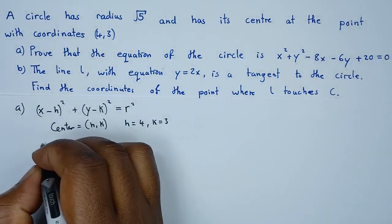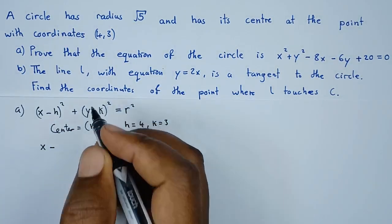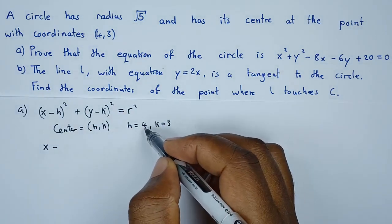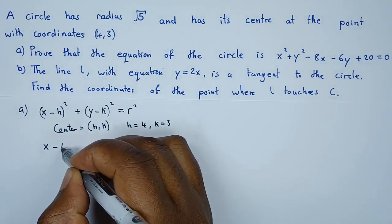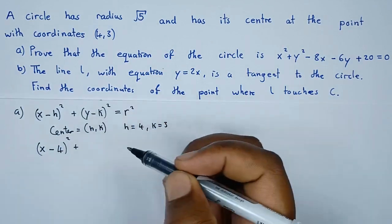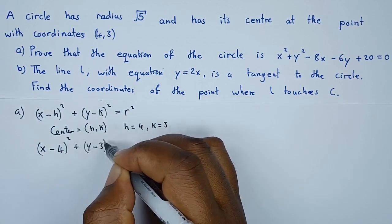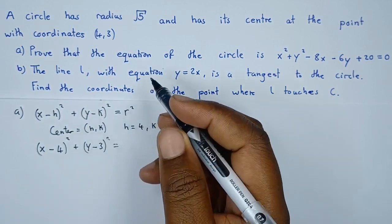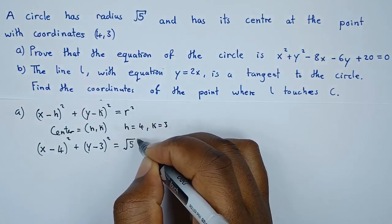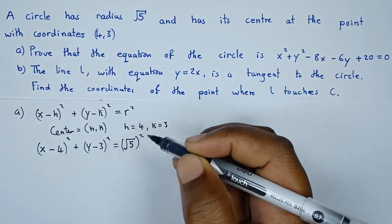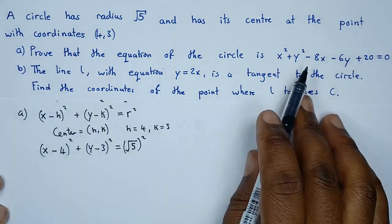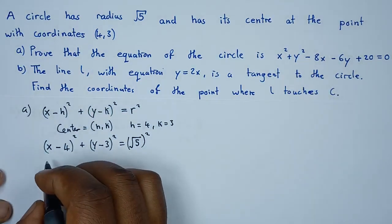Using the standard general formula, we have x minus h — and our h is 4 — so x minus 4, all squared, plus y minus k — and our k is 3 — so y minus 3, squared. We have been told that the radius is root 5, so r squared becomes root 5 squared. The next thing is to expand these two brackets.